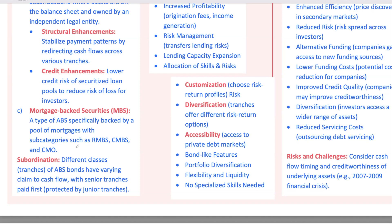Beyond MBS, there are collateralized debt obligations, CDO, collateralized loan obligations, CLO, and collateralized bond obligations, CBO, each backed by different kinds of debt assets from corporate loans to bonds. These structures give investors options to invest in a variety of asset types, depending on their preferences for risk, return, and cash flow timing.